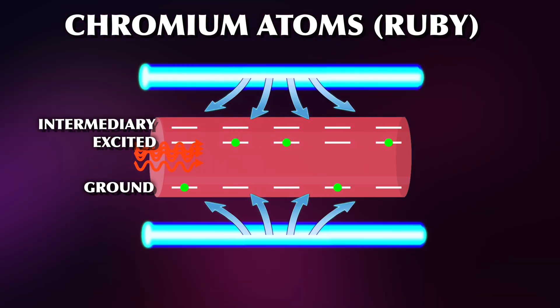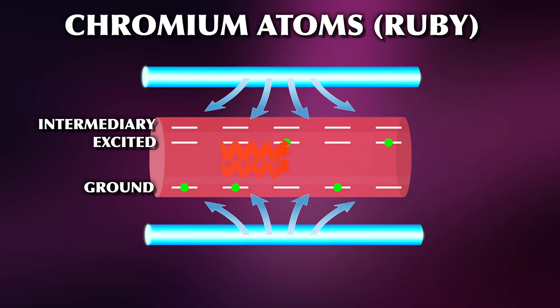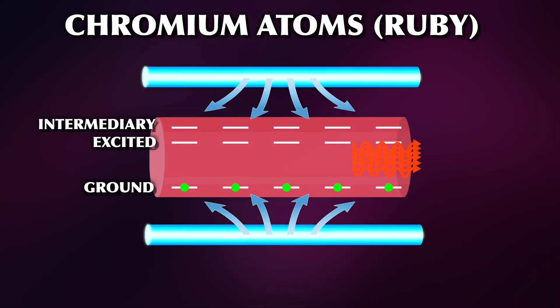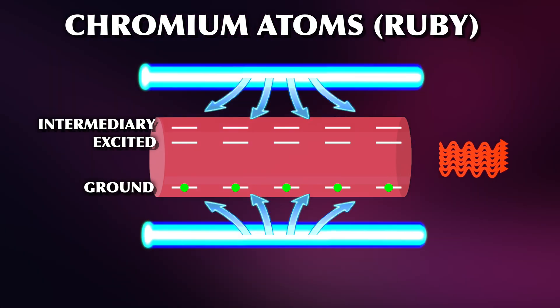The atoms are excited by pumping and drop down into the metastable second excited state. Eventually, photons are spontaneously emitted and trigger the whole avalanche. And with this, we already have the most important part of the entire laser.